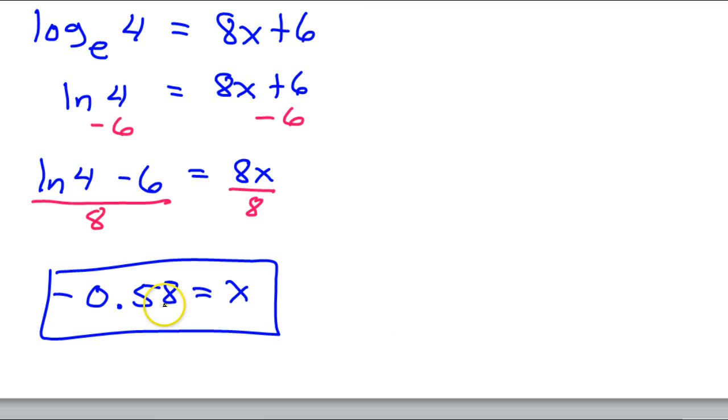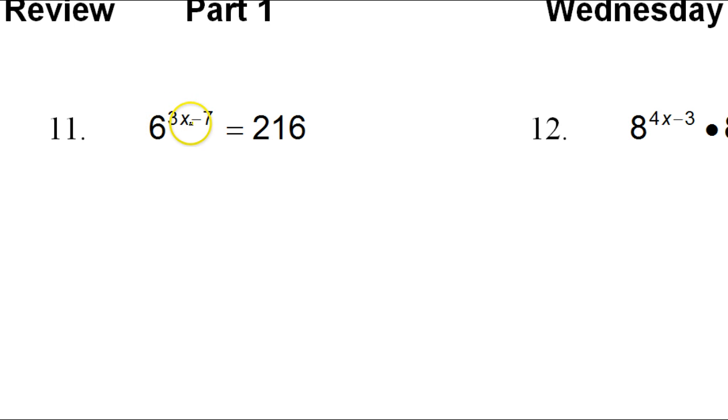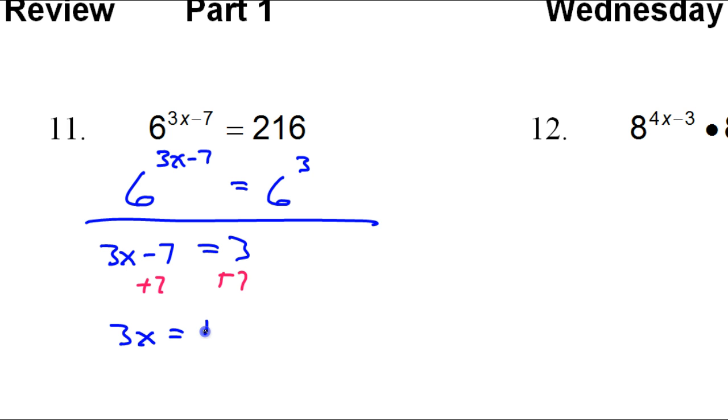Here's hundredth. So we had to do the two decimal places. And number 11. This one we already have the base and the power by itself. So there's two ways you could do this. We could rewrite this in log form right now. Or because I recognize that 216 is 6 to the third power, I could go like this and go 6 to the 3x minus 7 power is equal to 6 to the third power. And then I could use logic and go 3x minus 7 is equal to 3. And then I would add 7 to both sides.